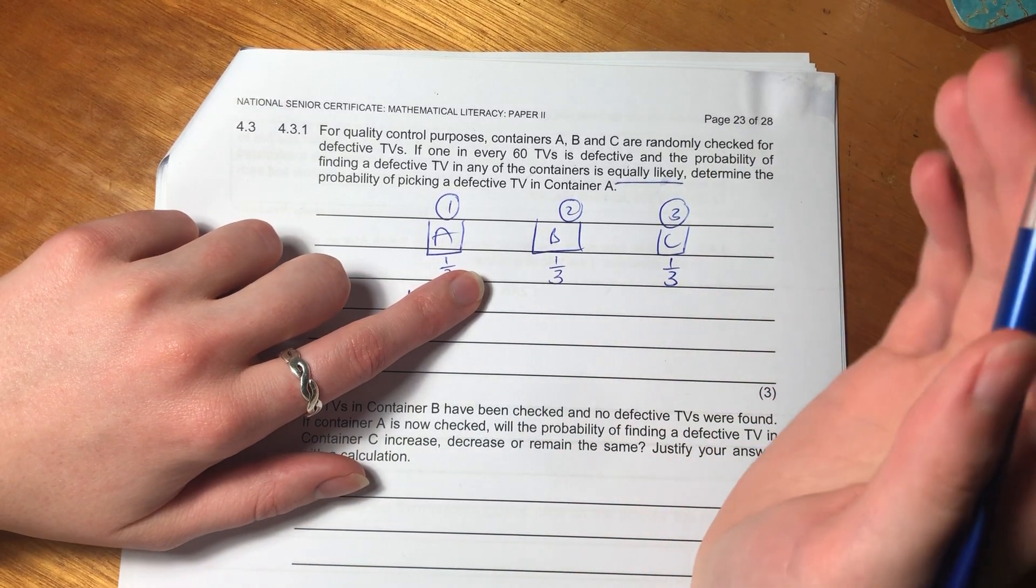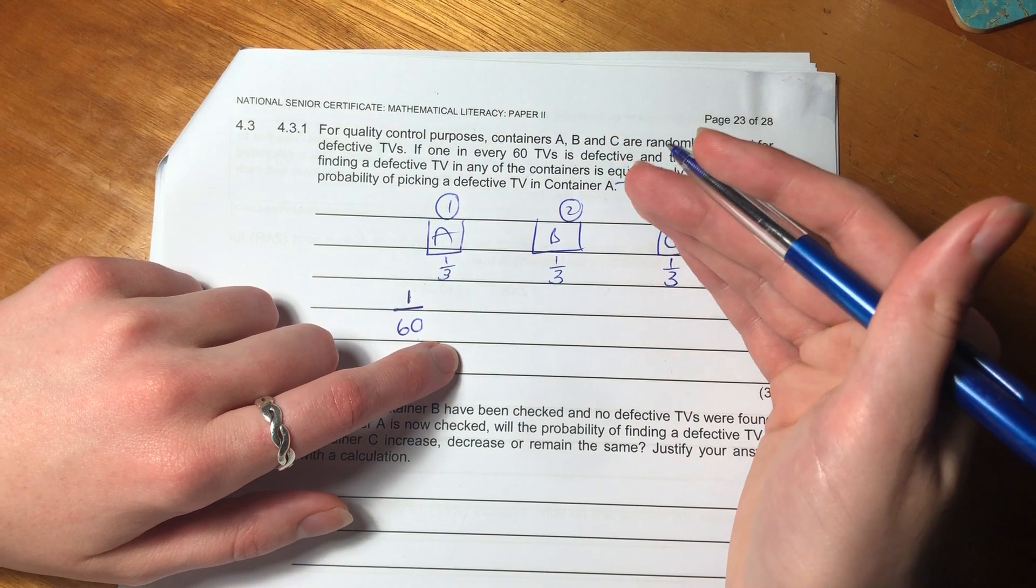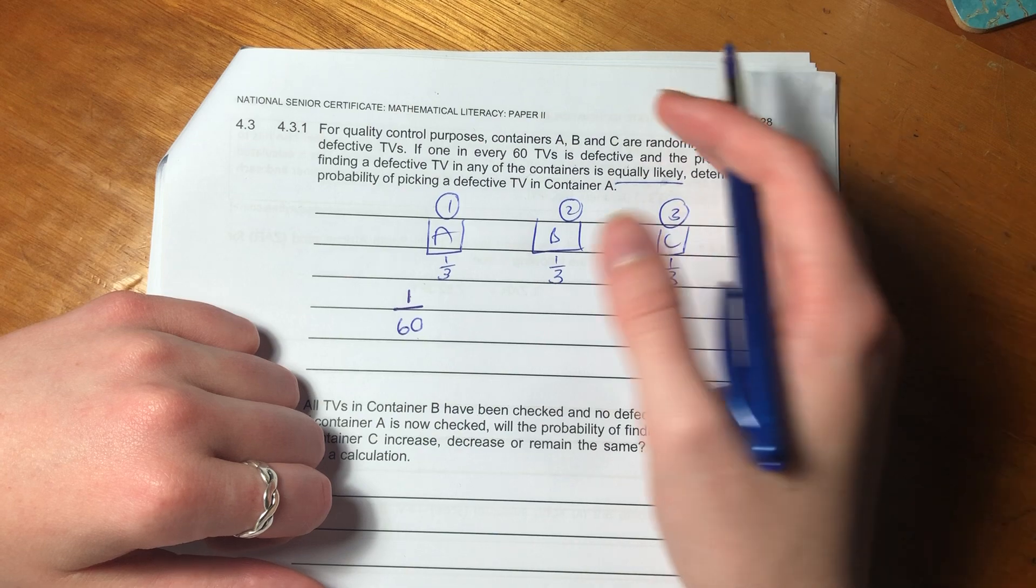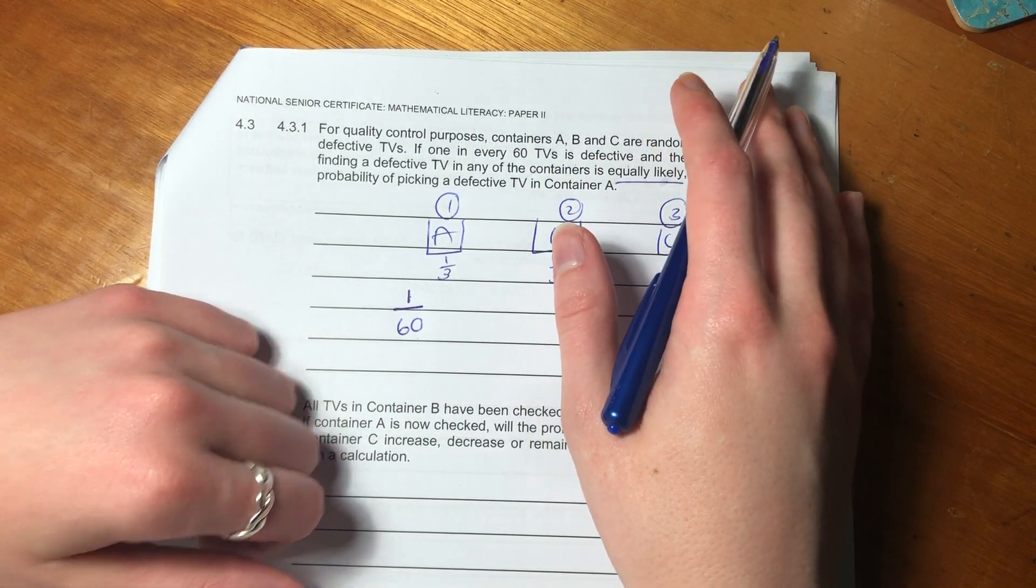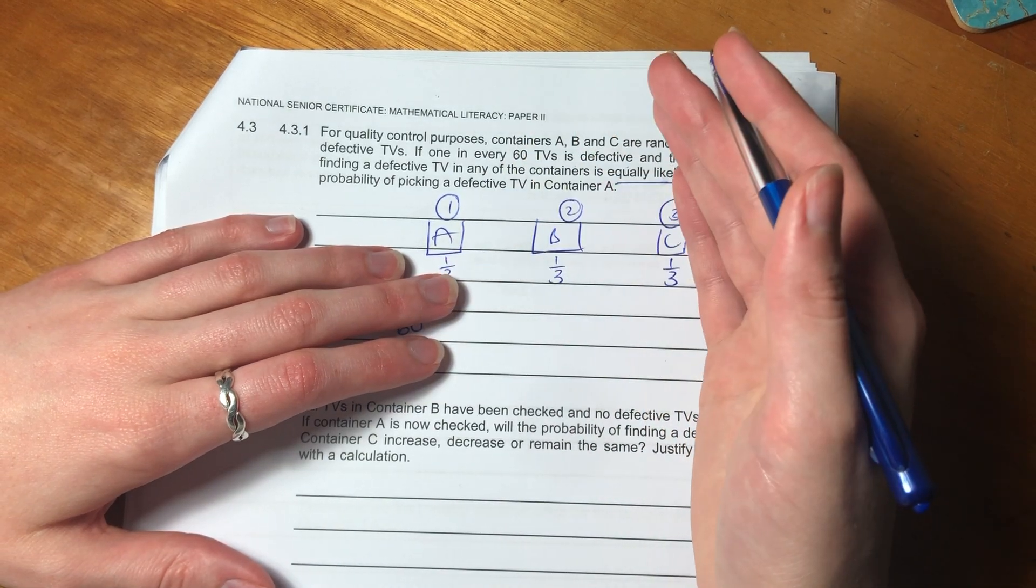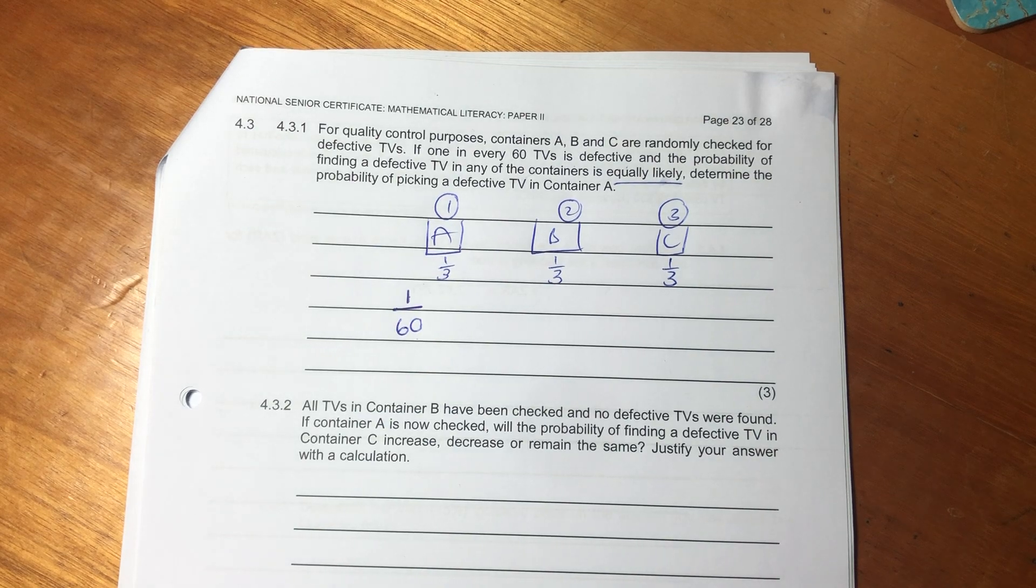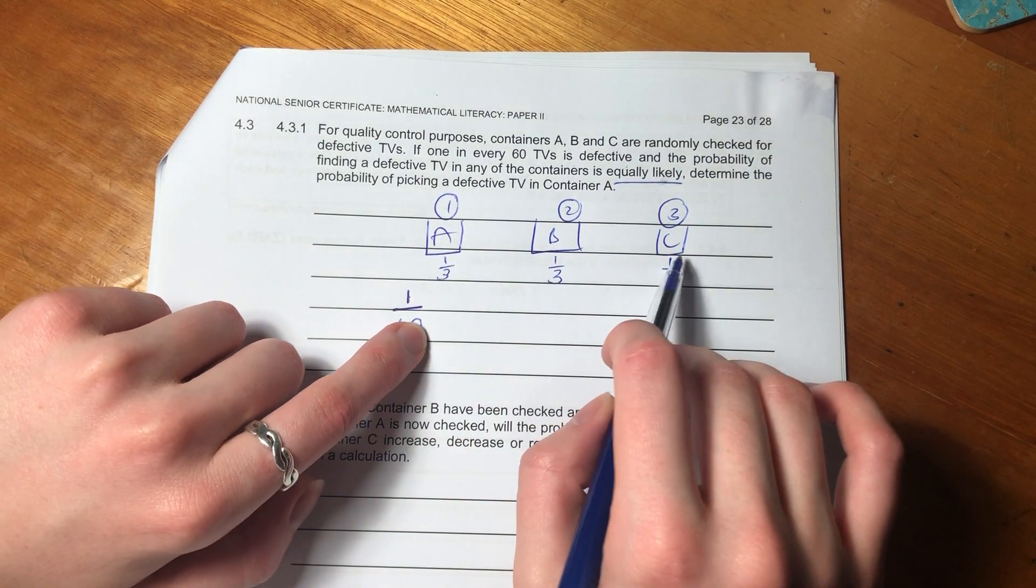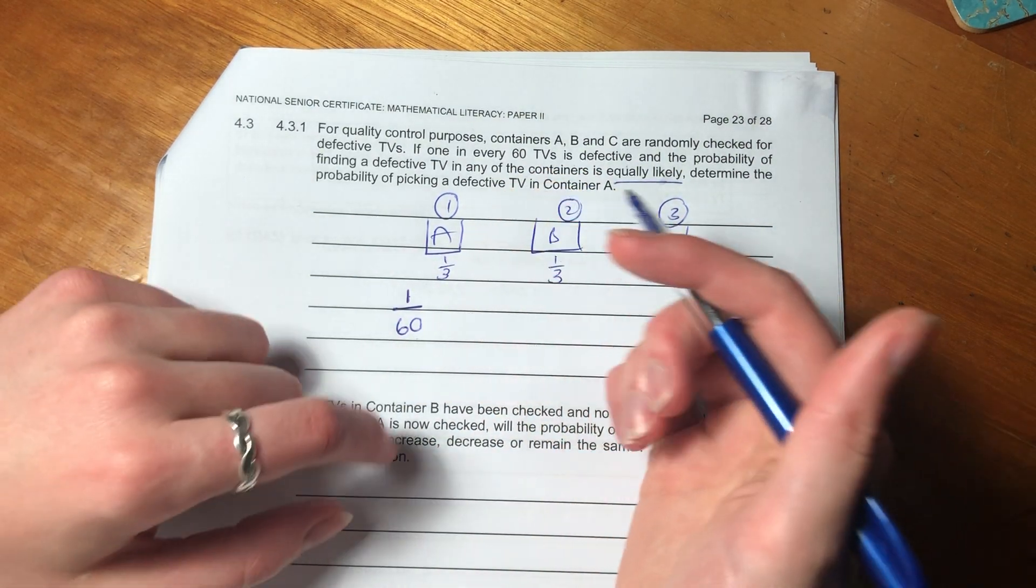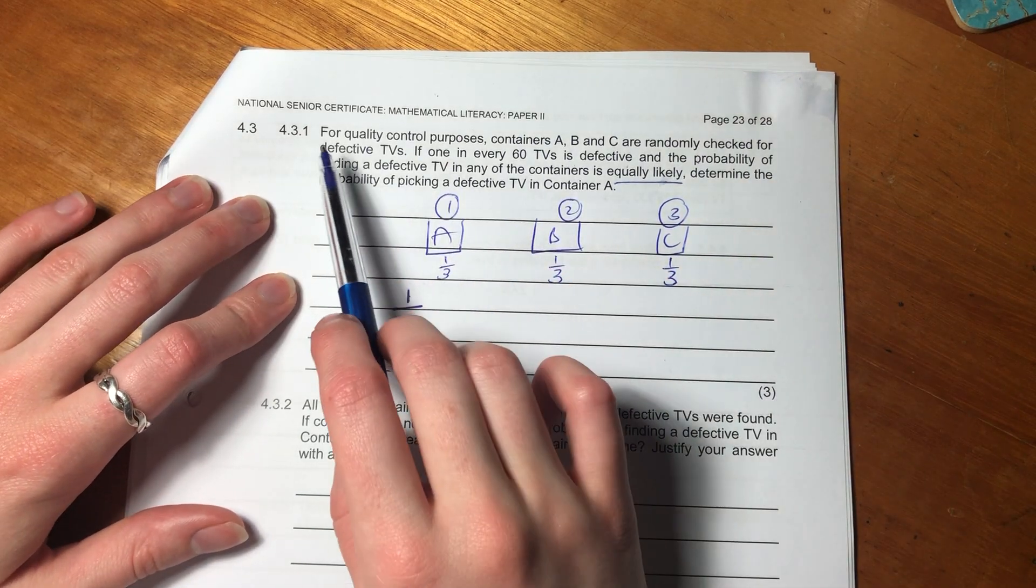Hello guys, so we're heading on to 4.3. This is the second last video for this paper and it's where we're looking at probability. Often when students see probability, they're like, this is where I lose all my marks, makes no sense. But let's just look at the scenario and see whether we can reason it out. And I think that if you start drawing probability like I started drawing it here to help yourself visualize what's happening, it's a lot easier to understand.